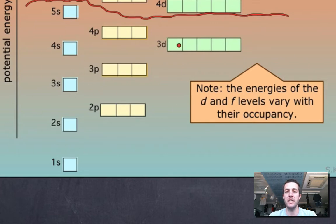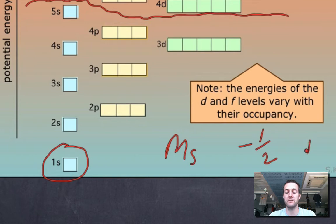This diagram represents each orbital as a box. If we look at the first shell here, so that's principal quantum number 1, you can see that there is one subshell in that shell, it's called the S subshell, and there's one orbital in that S subshell. You might remember that MS, the spin quantum number, can take values of minus a half or plus a half. That means that an electron going into one of these orbitals can be spinning one way or the other.